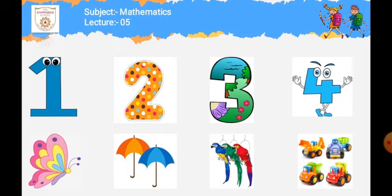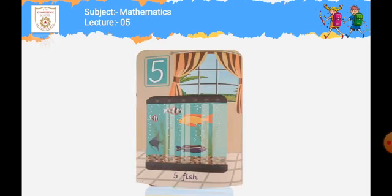Next: four toys — four toys. So we have one butterfly, two umbrellas, three parrots, four toys. First of all, take out your mathematics primer and open the page.